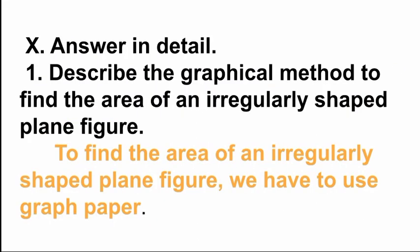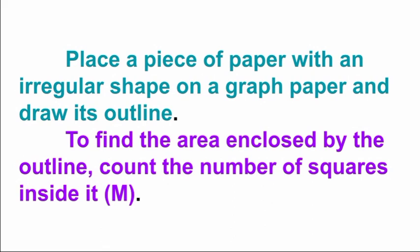Question from the answer in detail section: Describe the graphical method to find the area of an irregularly shaped plane figure. First step: use graph paper. Place a piece of paper with an irregularly shaped object on a graph paper and draw its outline.